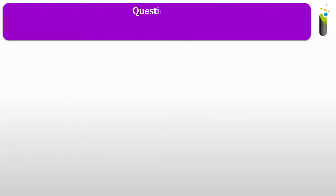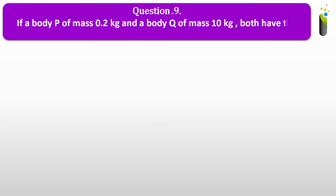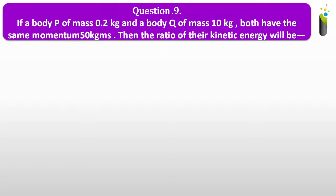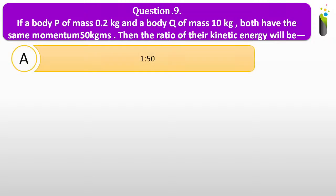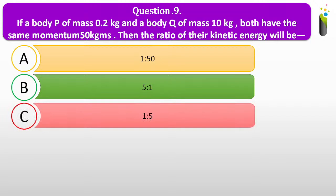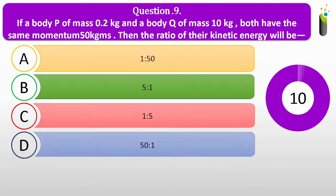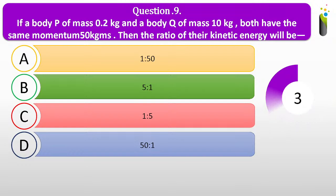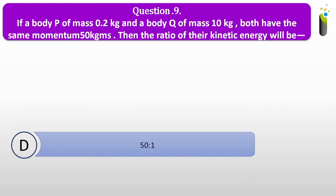Going ahead to question number nine. If a body P of mass 0.2 kg and body Q of mass 10 kg both have the same momentum of 50 kg m/s, then the ratio of their kinetic energy will be dash. Options: A, 1:50; B, 5:1; C, 1:5; D, 50:1. The answer is D, 50:1.